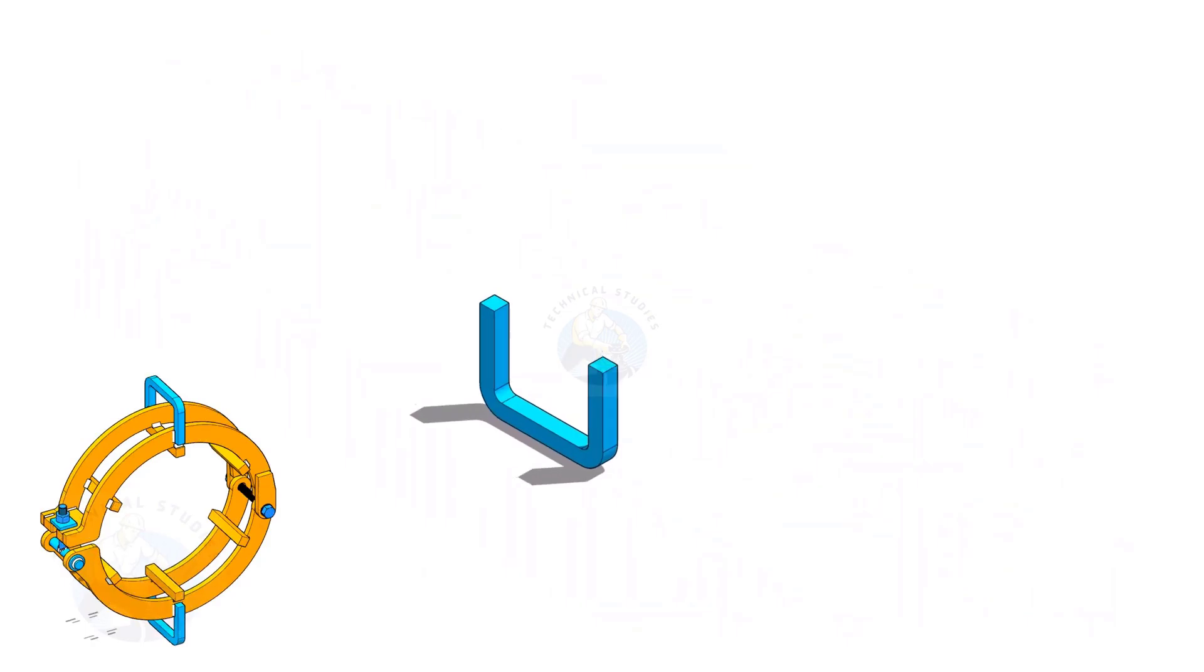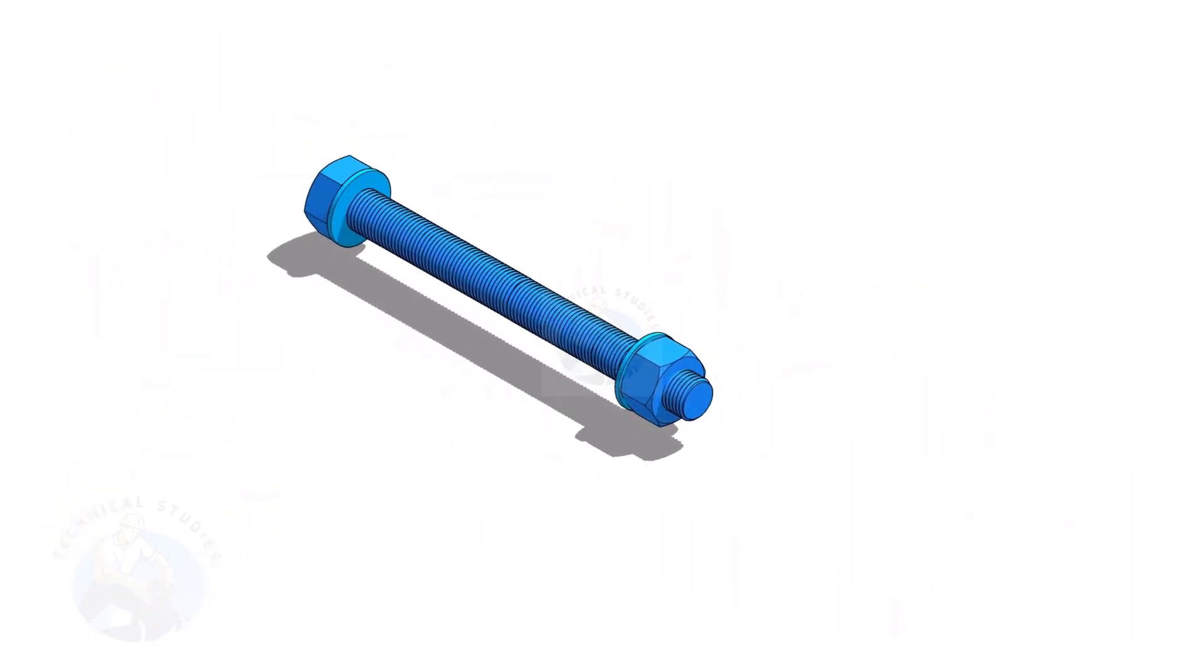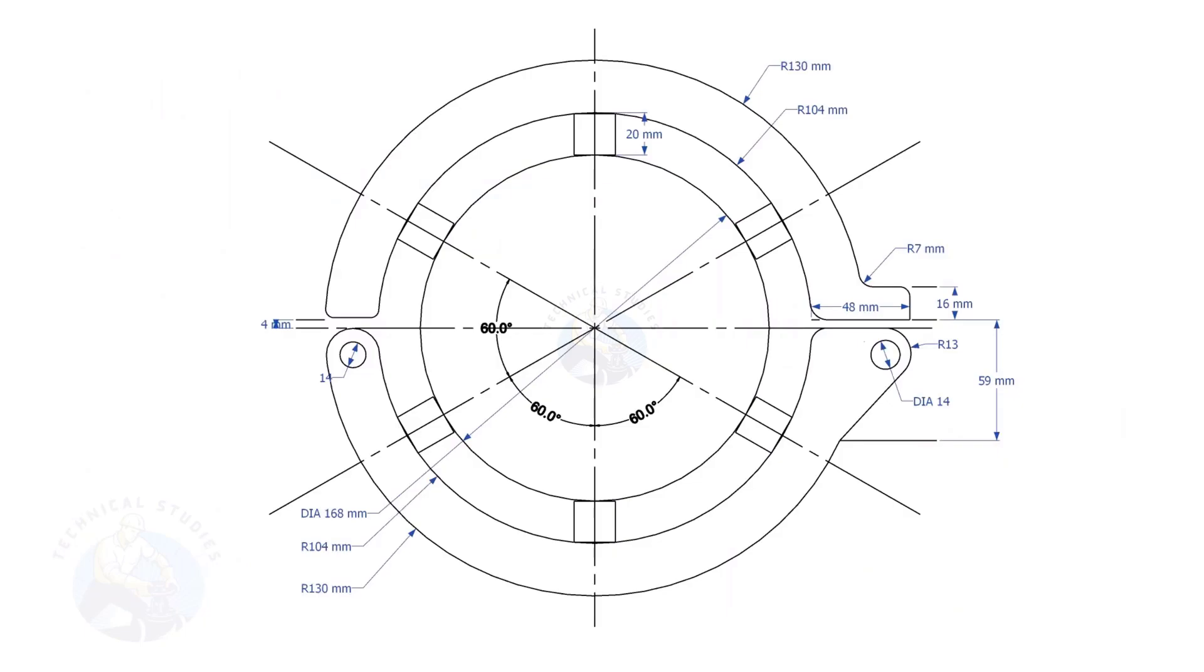Let us make the different parts of the pipe clamp. This is the main part of the clamp. I will explain to you how to layout this.